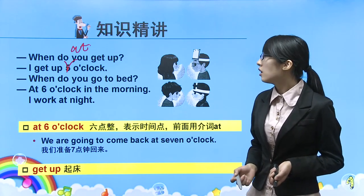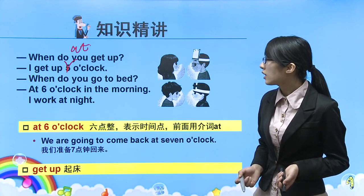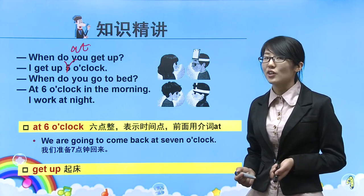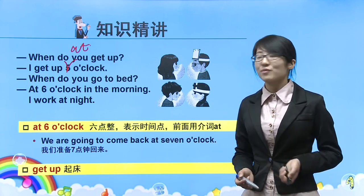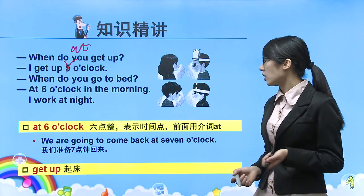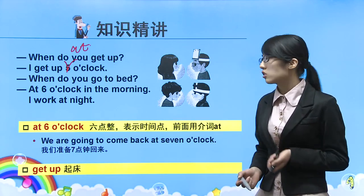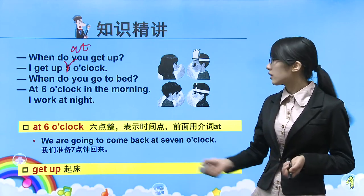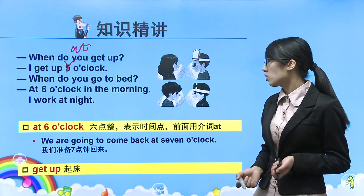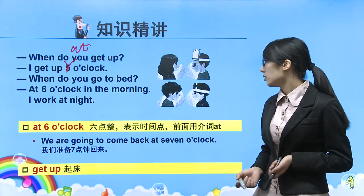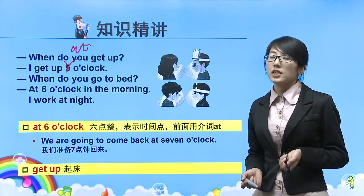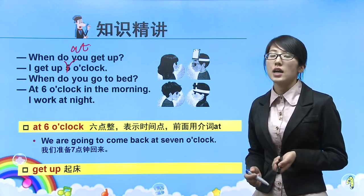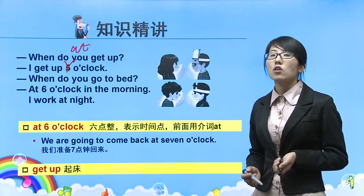例句：He goes to bed at six o'clock in the morning because he works at night. 他早上六点睡觉因为他上夜班。在某时间点用at，如at six o'clock / at six。We are going to come back at seven o'clock. 我们准备七点钟回来。介词总结：早上下午晚上用in；星期几前用on；年月季节用in；某时间点用at。起床get up，睡觉go to bed，需要掌握。